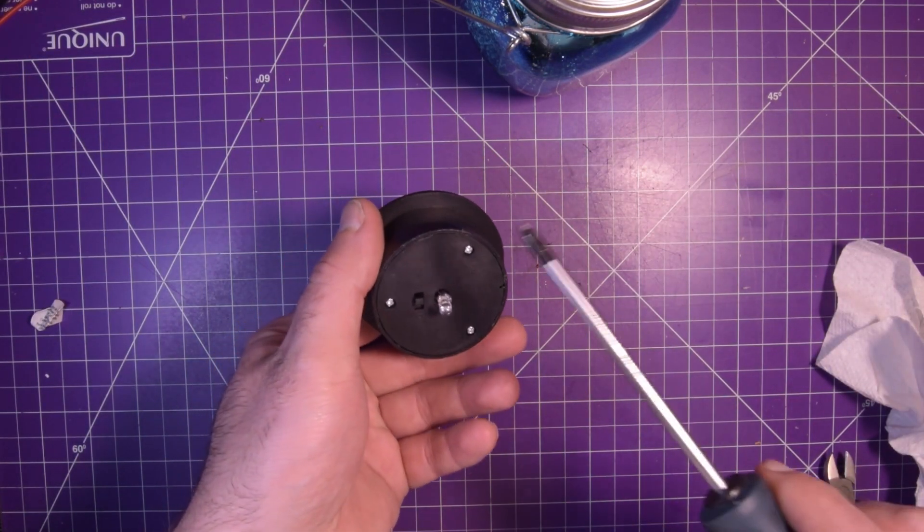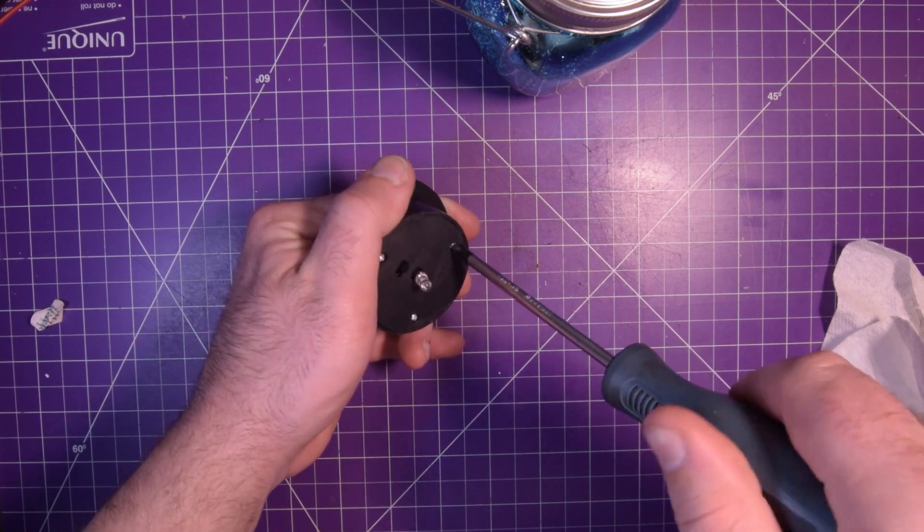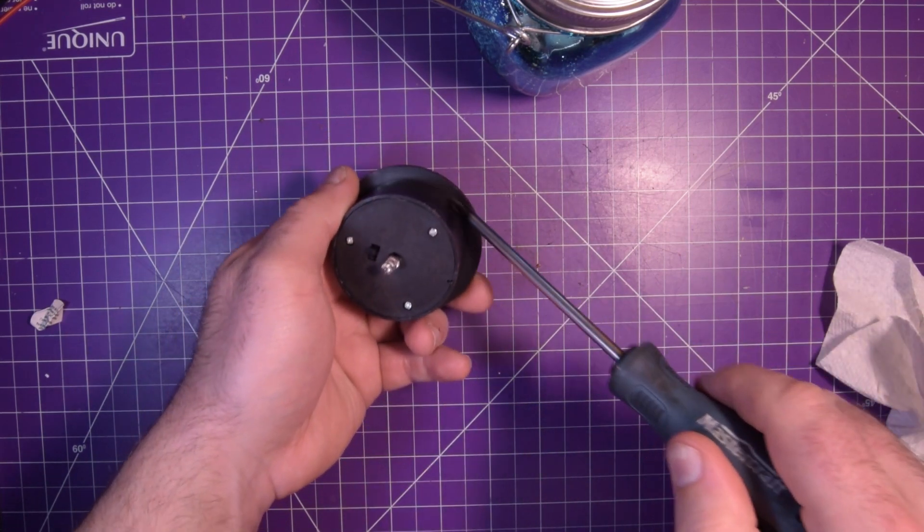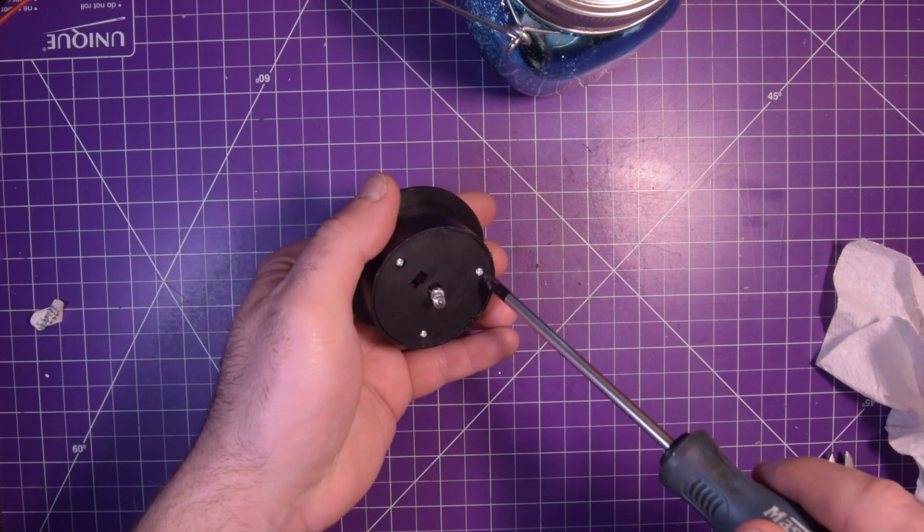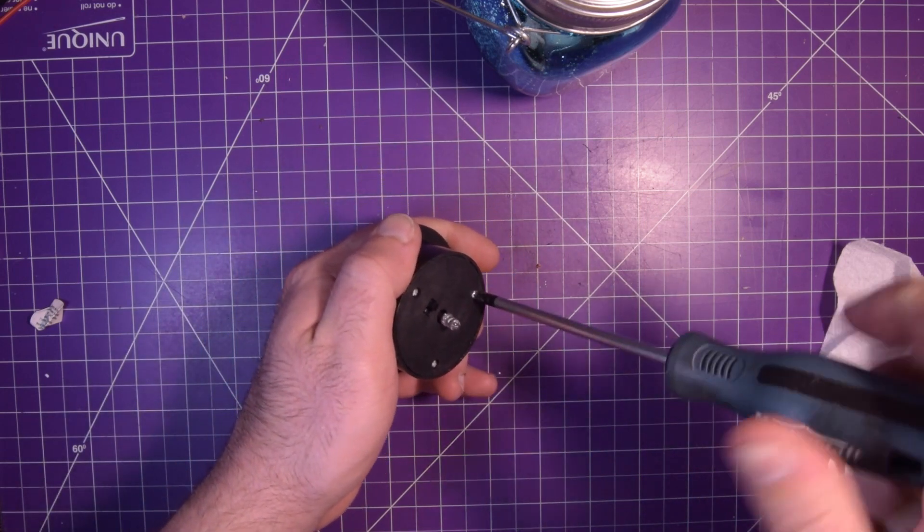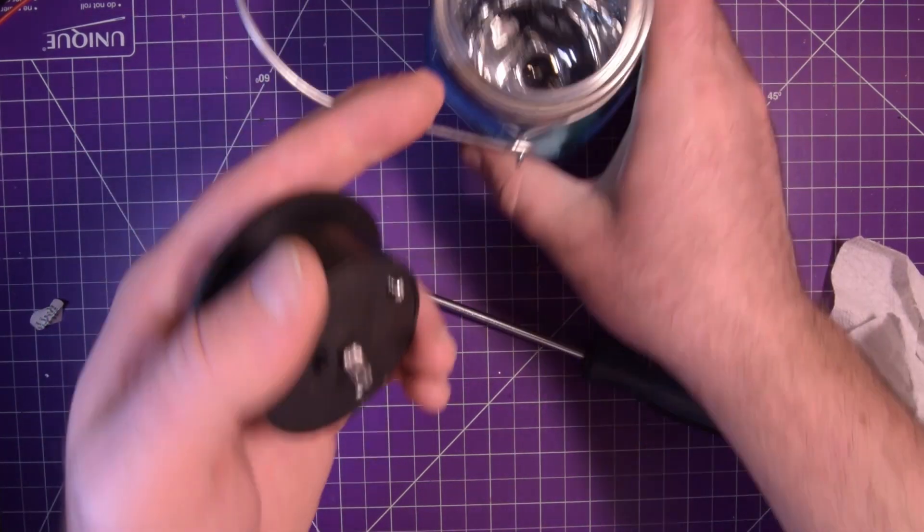Okay, three screws and you better believe that we're gonna find out what's inside. I really wish this was a rubber seal but it's not, it's plastic. That's fine. Also comes with a nice hook.